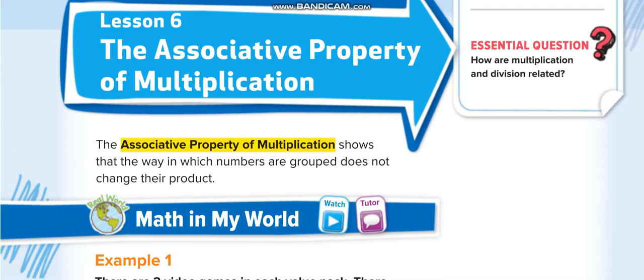In the associative property we have three numbers. I think in the last chapter we took the associative property of addition, and this time it's for multiplication. So let's take an example: we have two times three times four.